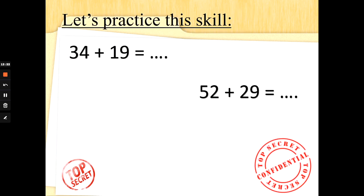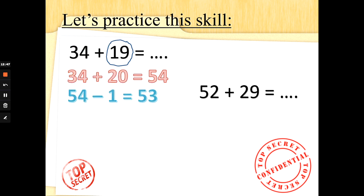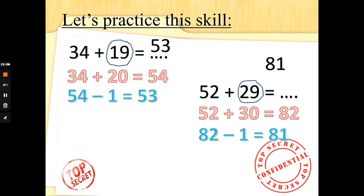Let's try adding 19: 19 is 1 away from 20. It is much easier to do 34 add 20 quickly in our heads — 34, 44, 54. But we weren't supposed to add 20; we were supposed to add 19, so we need to take 1 away: 54 take away 1 is 53. And for 52 add 29: 52 add 30 is 82, take the extra one away — 81. This is a bit challenging; we will be doing lots more in class and there are more Special Agent videos on rounding and adjusting coming up soon.